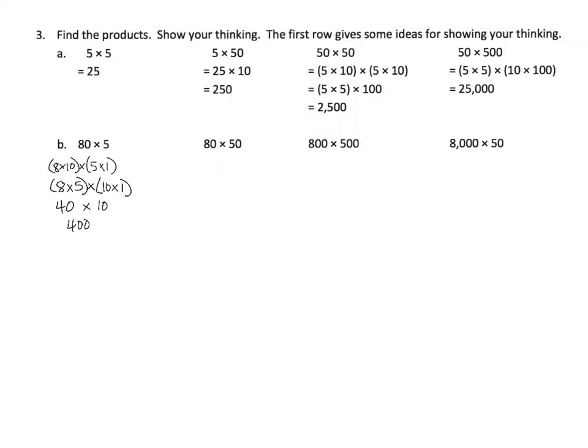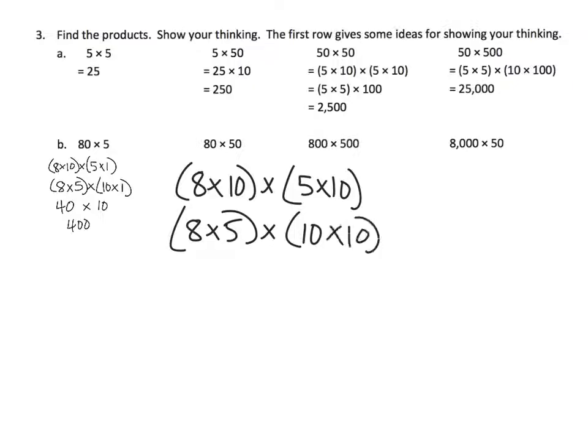Now let's look at 80 times 50. Well that's 8 copies of 10 times 5 copies of 10. Using the commutative and the associative property, we can move things around and regroup them and get 8 times 5 times 10 times 10. So that equals 40 times 100, which is equal to 4000. The idea being we've got 40 and we're going to stick on those two extra zeros.